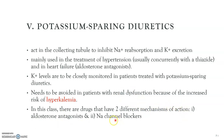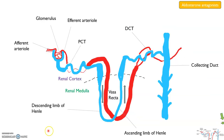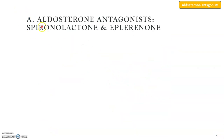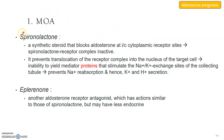The aldosterone antagonists are mainly spironolactone and eplerenone. The mechanism of action for spironolactone is that it is a synthetic steroid that blocks aldosterone intracytoplasmic — intracellular cytoplasmic — receptor sites, and this causes the spironolactone-receptor complex to be inactive.